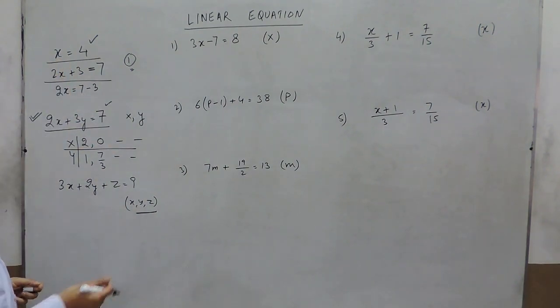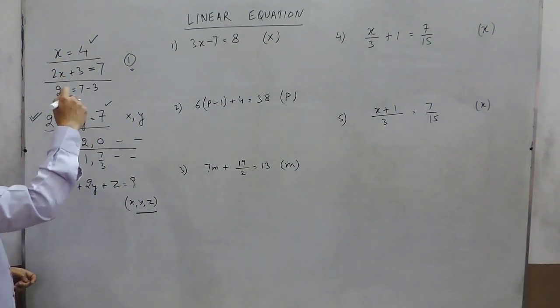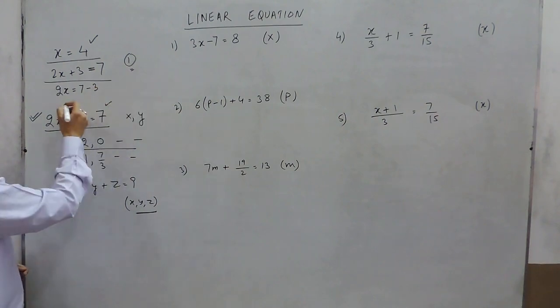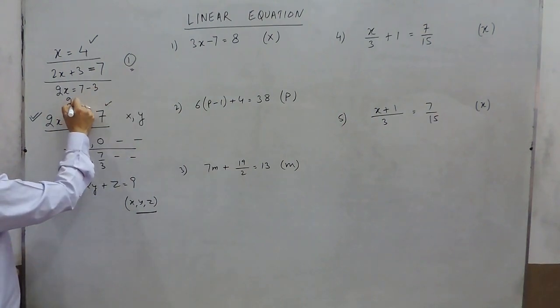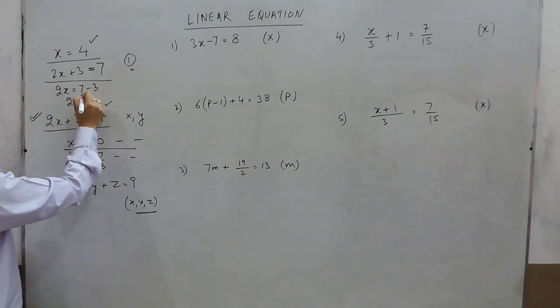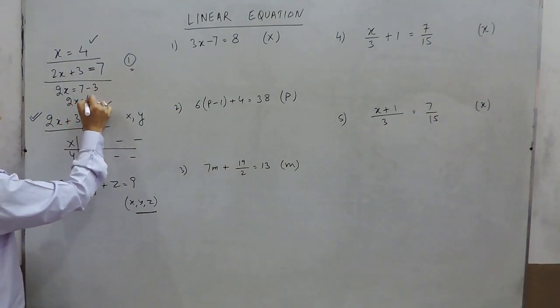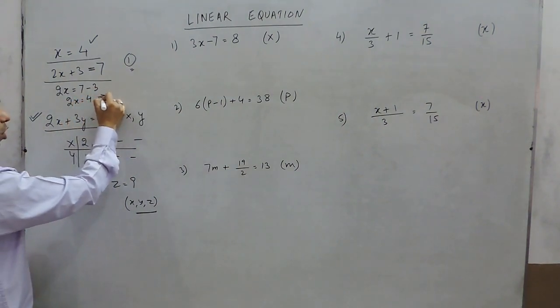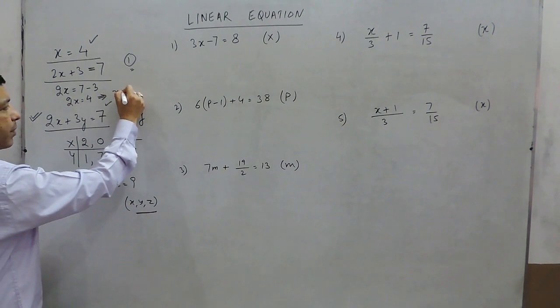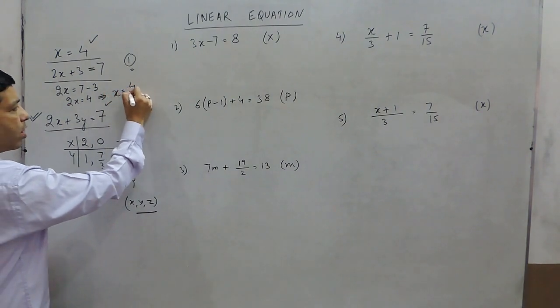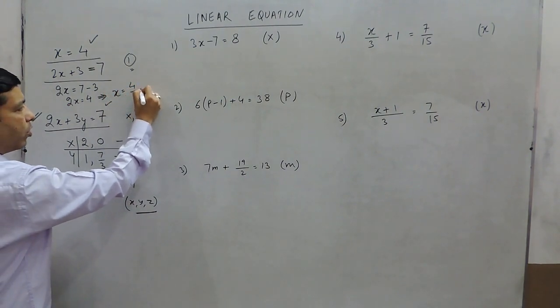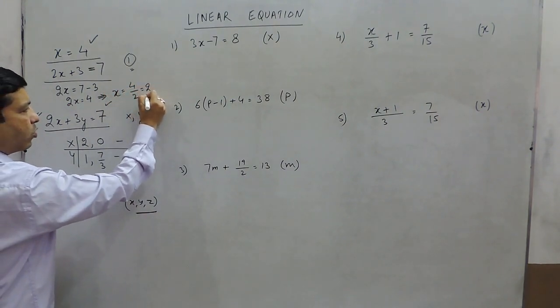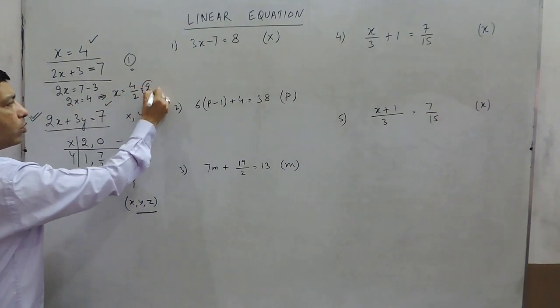So 2x equals 4. Solving this, x becomes 4 upon 2, and the value comes out to be 2.